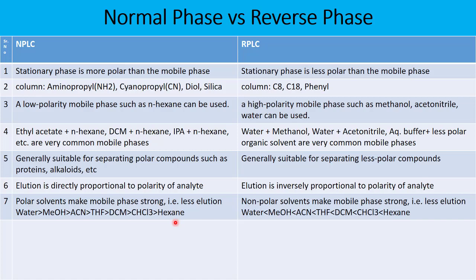In reverse phase liquid chromatography, non-polar solvents make the mobile phase stronger — for example ACN and THF. A stronger mobile phase results in less retention time. Water is the weakest solvent in reverse phase, followed by methanol, acetonitrile, THF, dichloromethane, chloroform, and hexane. However, solvents beyond THF — such as DCM, chloroform, and hexane — are not miscible with water and therefore cannot be used in reverse phase liquid chromatography.